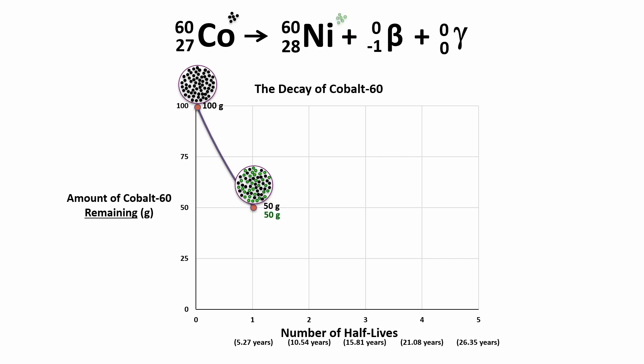Your sample will be made up of 50 grams of cobalt-60 and about 50 grams of nickel-60, which I've represented here as green dots. I should point out that cobalt-60 atoms and nickel-60 atoms have approximately the same mass, since they're both made of 60 nucleons in total.